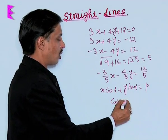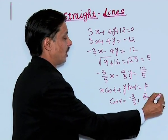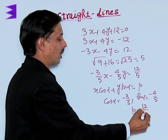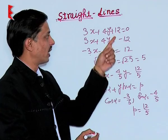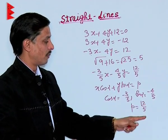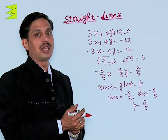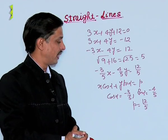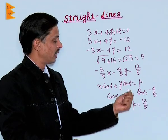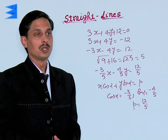The answer: cos alpha is minus 3 upon 5, sin alpha is minus 4 upon 5, and p is 12 upon 5. The length of the perpendicular drawn from the origin to this line is 12 upon 5, and the perpendicular makes such an angle with the positive direction of the x-axis so that the values of cos alpha and sin alpha are minus 3 upon 5 and minus 4 upon 5 respectively.